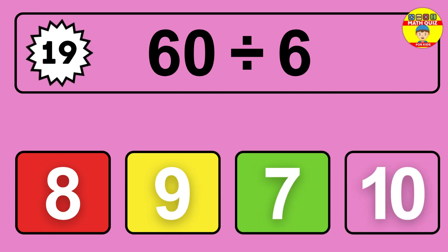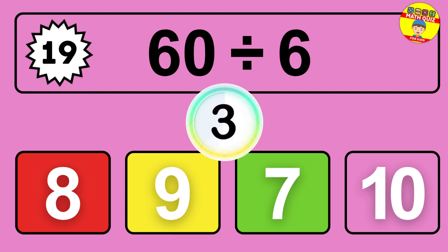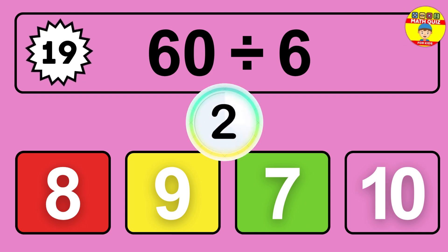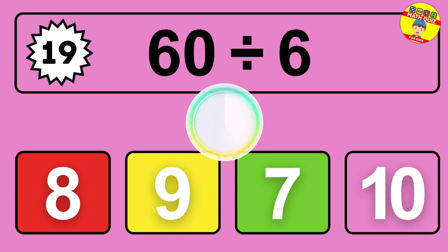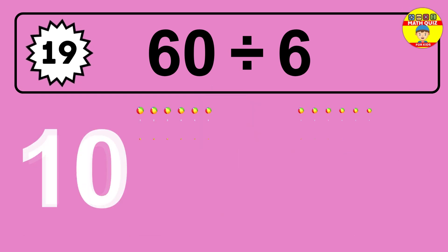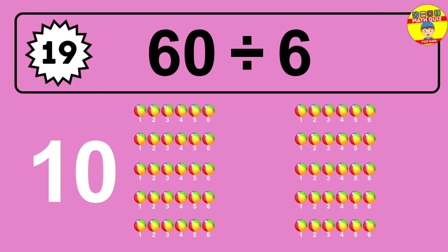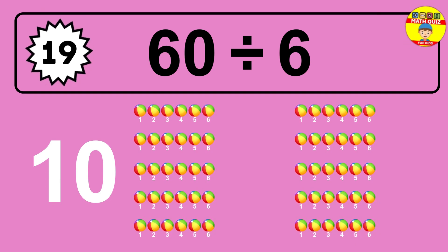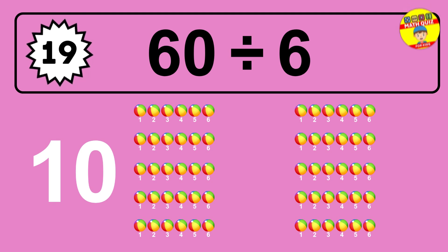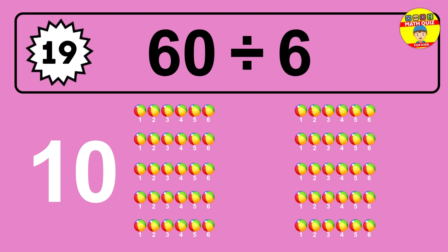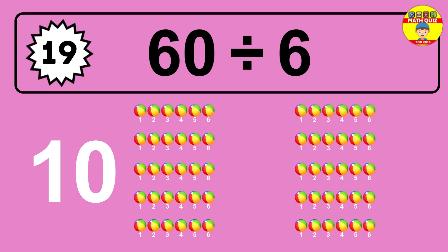What is 60 divided by 6? You have 60 objects that you need to divide into groups of 6. How many groups would you have? Let's think about it. Ready to find out? Let's break it down. Imagine you have 60 objects. Can you see them all lined up?